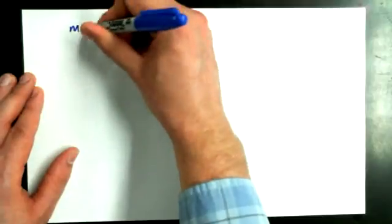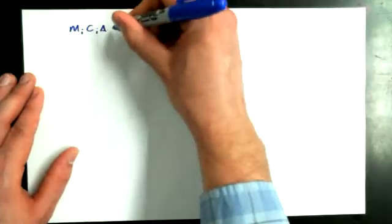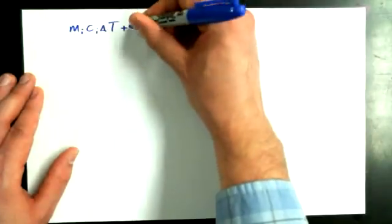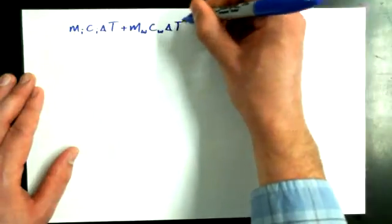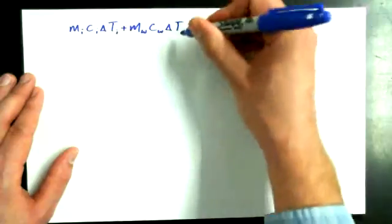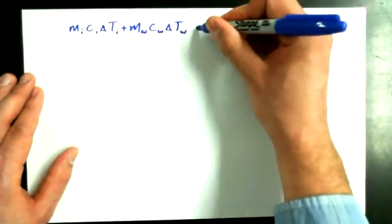Okay, I want to bring back this idea that we just stated. We just said that M-I-C-I times delta T plus M-W-C-W times delta T, and I should say this is delta T for iron, this is delta T for water, is equal to zero.